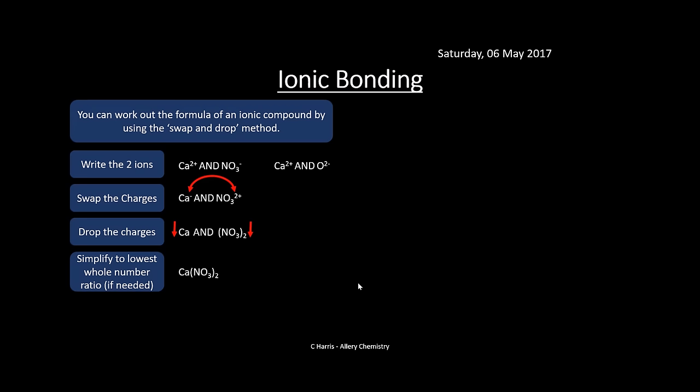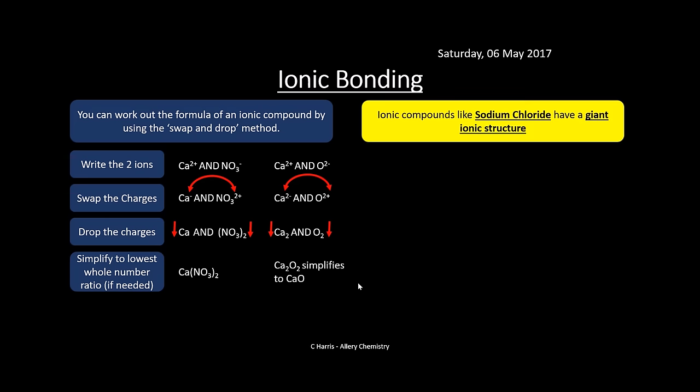The minus is gone from calcium and we simplify to whole numbers — in this case Ca(NO₃)₂, which is calcium nitrate. Let's look at another example: calcium and oxygen. Swap the charges — two minus and two plus — drop them to get Ca₂O₂, then simplify to CaO, which is calcium oxide. You can do this for any type of ion.